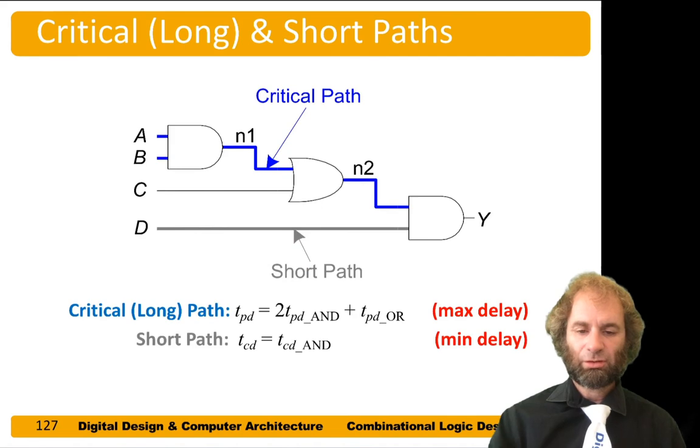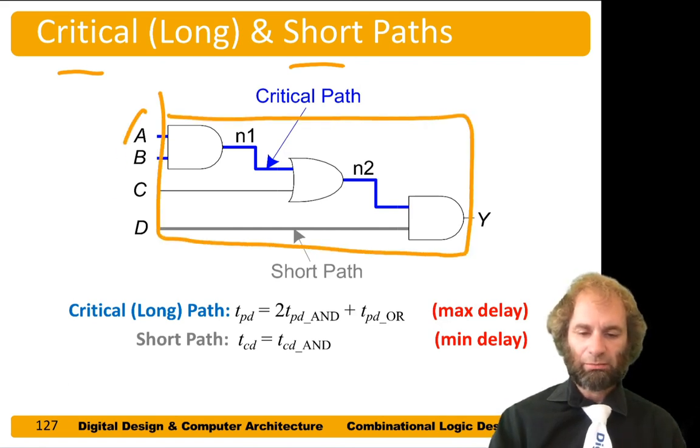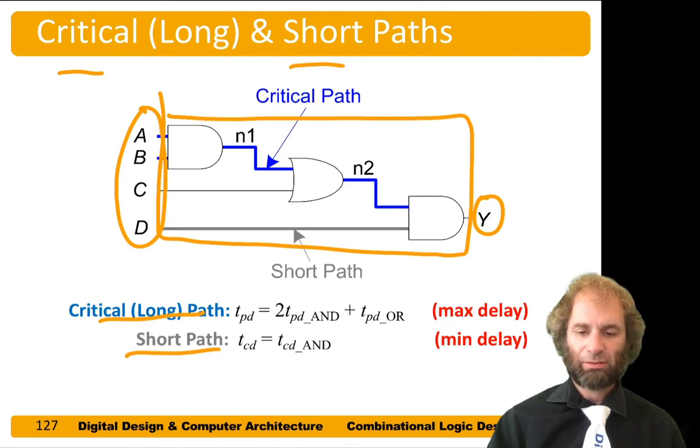We introduce the notion of critical or long paths and short paths. When we have an entire circuit here, our inputs are A through D and our output is Y. We want to know the longest time for any of the inputs changing and the shortest time. The longest path from any of these inputs changing to the output seems to go through all of these gates.